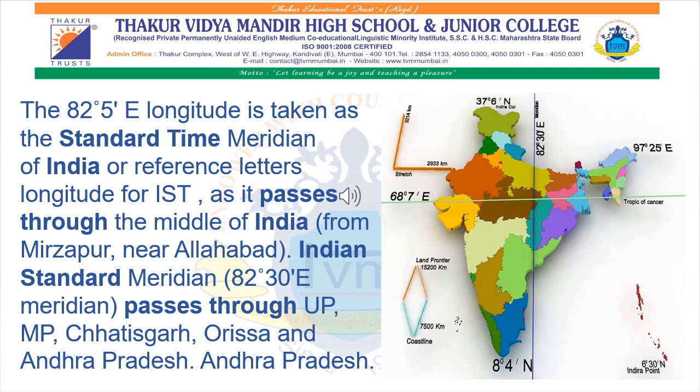For India, the Indian Standard Time has been decided according to the 82 degree 30 minutes east longitude, which passes through Mirzapur near Allahabad, Uttar Pradesh. This is because this longitude passes through the middle of the country with reference to its longitudinal extent. The local time at this longitude has been selected as the standard time of the whole country. When the sun is directly overhead on this longitude, it is assumed that it is 12 noon everywhere in India. There is no difference of more than one hour between the local time at 82 degree 30 minutes and other places in the country.